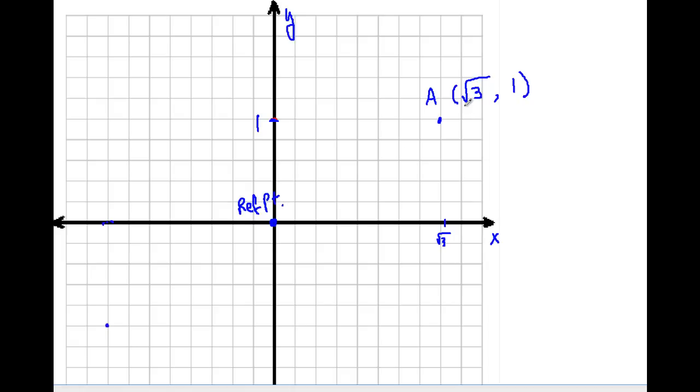Another common way to express point A is using the R theta format, which is the polar format. Now, this nicely works out in that point A is exactly 30 degrees counterclockwise. That's why it's positive and it's 2 units away from the reference point at the origin. So, in our R theta format, we have 2 units and positive 30 degrees.